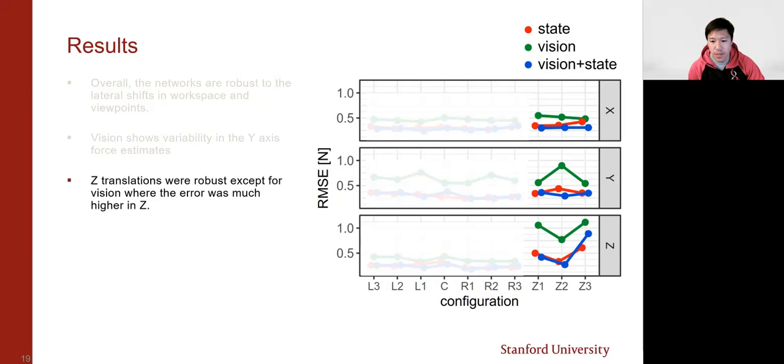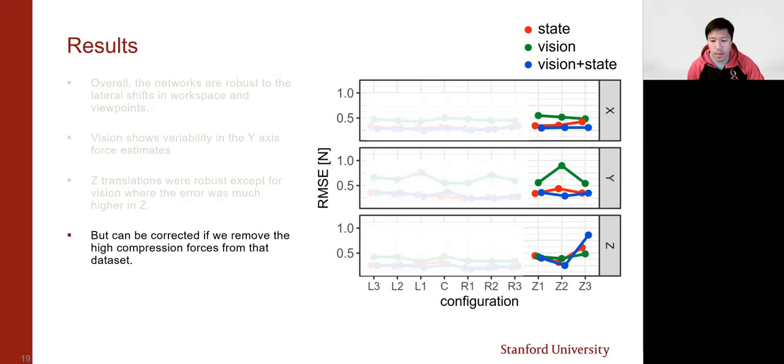However, the data for z configurations had higher palpation forces compared to other configurations. Because the harder we palpate, the less visual force information we get, and this is especially bad for the vision network. So if we actually remove the higher palpations and control for that, we see that the vision network actually exhibits similar performance across the z configurations, and this implies that the vision-based only network does generalize pretty well to translations in the z-stage.